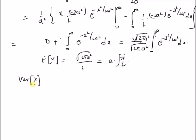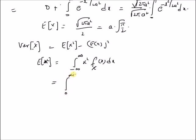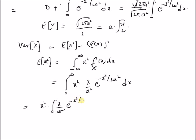Now let us derive the variance of this Rayleigh random variable. Variance is defined as E[X²] − (E[X])². Since we already know E[X], we want to find the second moment E[X²], defined as the integral from 0 to infinity of x² · (x / a²) · e^(−x² / 2a²) dx.